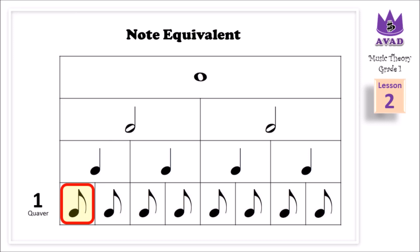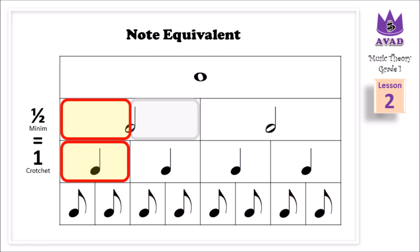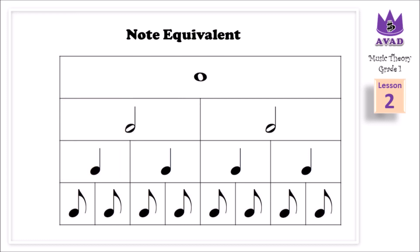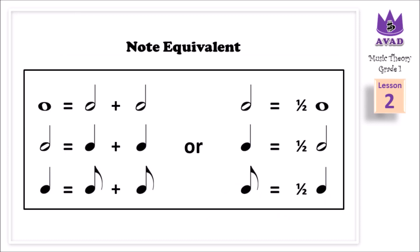1 quaver is equal to half a crotchet. 1 crotchet is equal to half a minim. 1 minim is equal to half a semibreve. A semibreve equals 1 minim plus 1 minim.